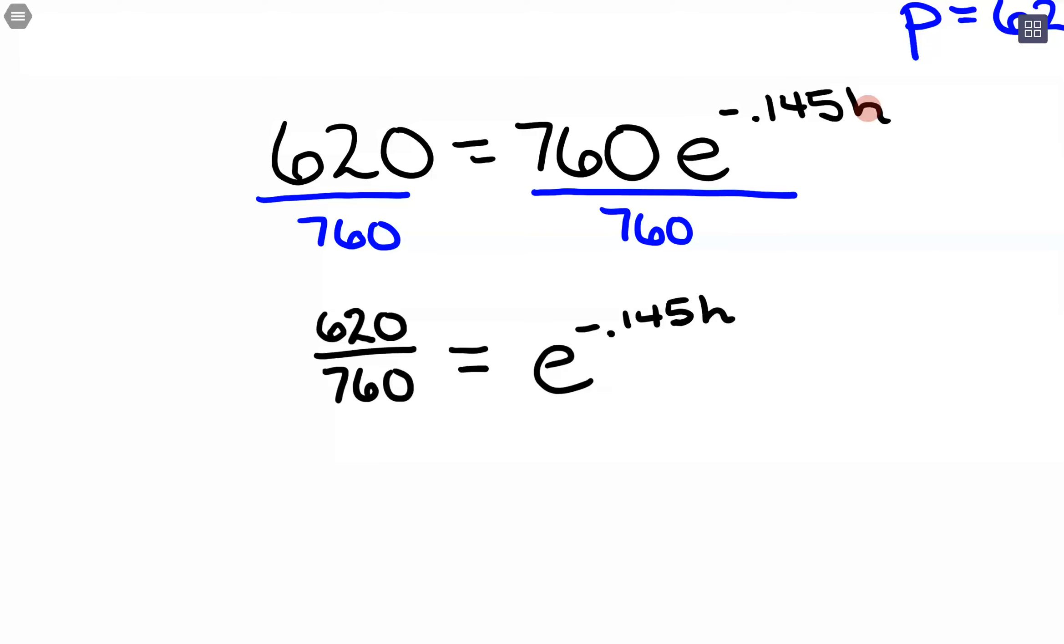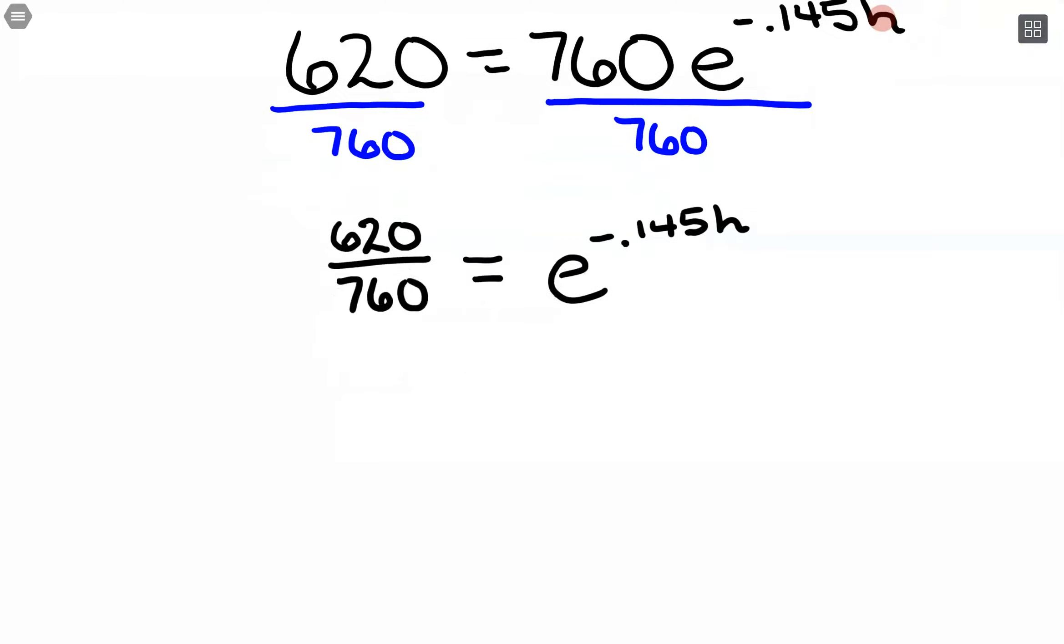And now that I'm in this form, I can see value, base, exponent. And those are my only three pieces. There's no other operations happening around that. So now I can move to logarithm form.